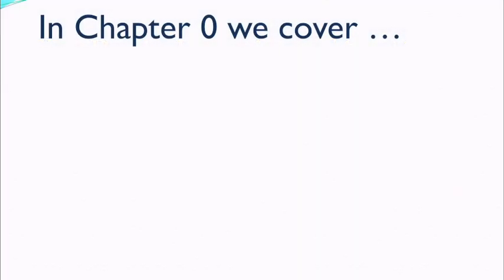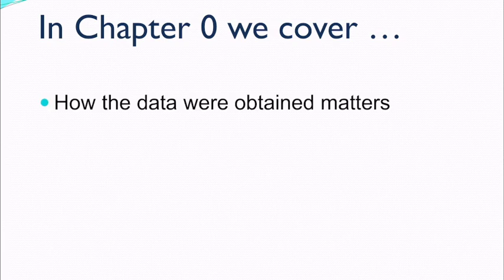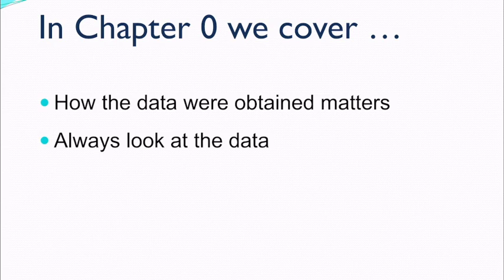In Chapter 0, we're going to cover how data is obtained, where they're obtained, and why that matters. We're also going to discuss why we always need to look at the data without making assumptions of the group as a whole. We need to make sure we always look at every single piece of data.